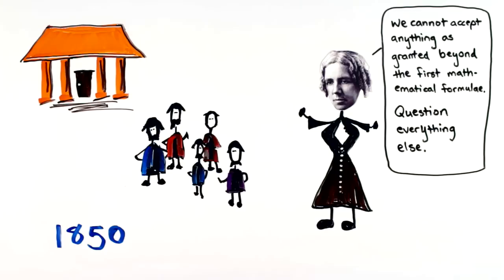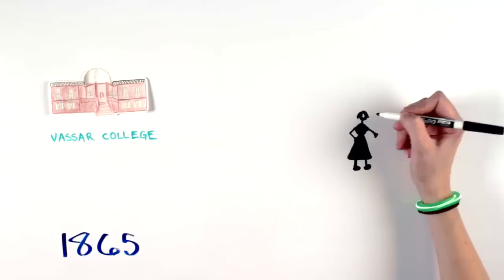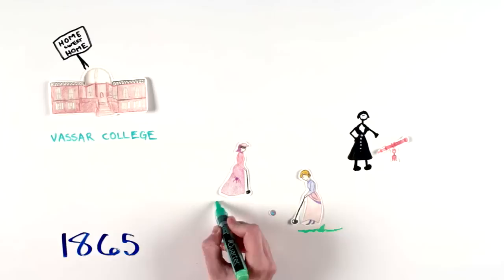In 1865 she became Vassar College's first professor and taught astronomy there for 23 years. She lived in the observatory and used her home as a gathering place for the discussion of politics and women's issues.